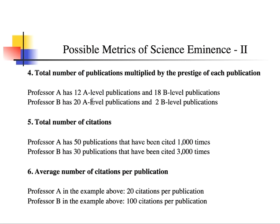Professor A may have 12 A-level publications and 18 B-level publications, for 30 total, whereas Professor B has 20 A-level and 2 B-level publications, for 22 total. Even though Professor B has fewer publications overall, you would calculate the weighted additive score to determine who has a more productive record using this metric.